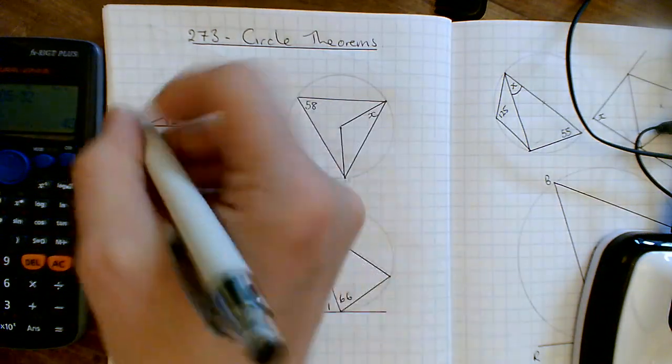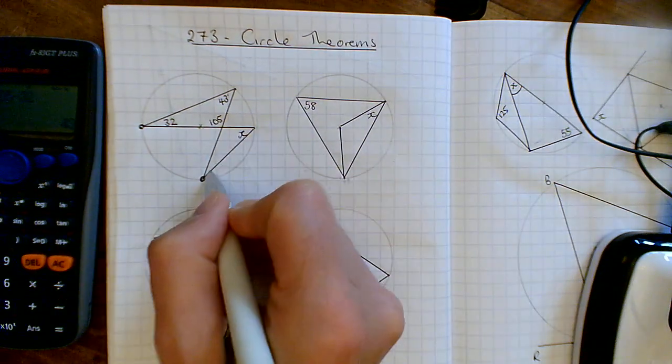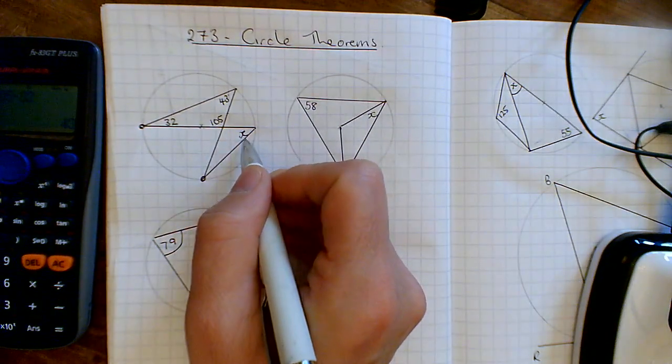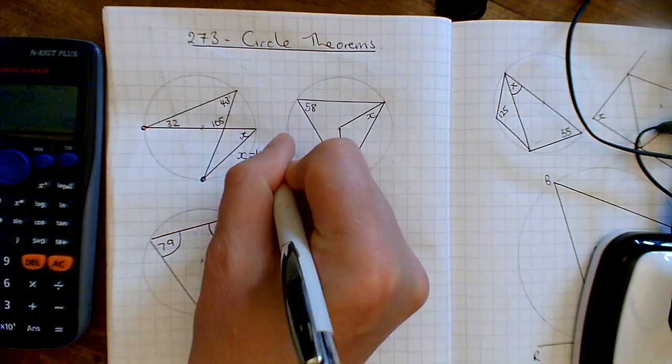But now I know what x is, because if I take these two points, I can draw an angle to the 43, and I draw an angle to the x. And this is known as the angles in the same segment, and the angles in the same segment are equal. So x must equal 43 degrees.